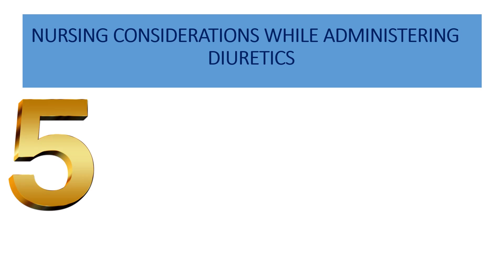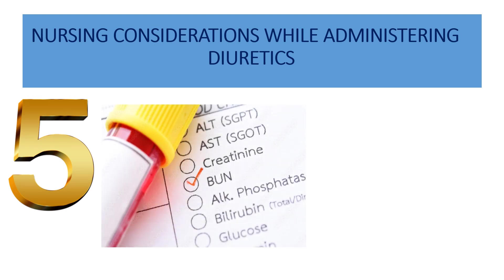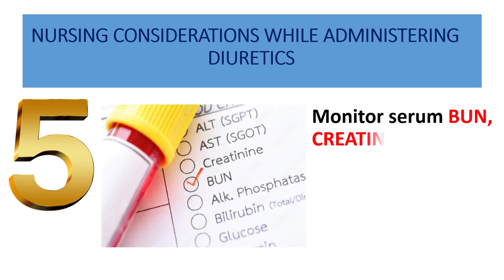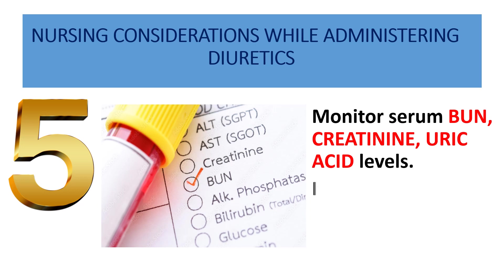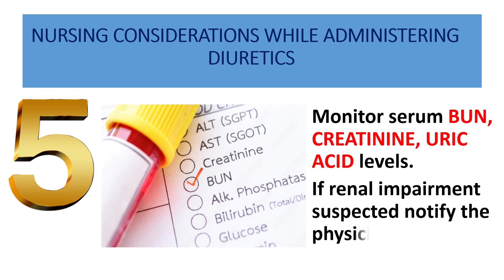Our fifth nursing responsibility is to monitor the serum blood urea nitrogen levels, creatinine, and uric acid levels. If the blood urea nitrogen and creatinine levels are high, renal impairment is suspected and should be notified to the physician as early as possible. Also closely watch uric acid levels, as thiazide diuretics cause hyperuricemia, leading to the risk of developing gout in the patient.